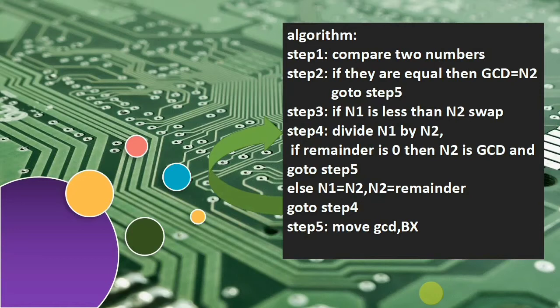If they are not equal, we check if N1 is less than N2 and perform swapping, because a smaller number cannot be divided by a larger number. So we swap the two numbers so that the numerator is the larger value and the denominator is the smaller value. Then the logic is to divide the first number by the second number, that is N1 by N2.